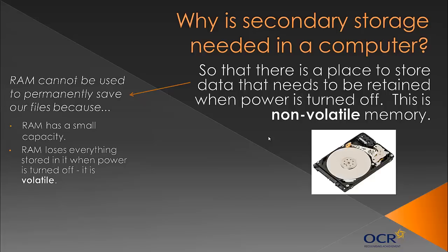RAM generally has a smaller capacity than a hard disk because in RAM it's harder to maintain speed with lots of data, which means hard drives have huge amounts of space — maybe a terabyte, two terabytes, three terabytes. RAM maybe only has eight gigabytes, which is a huge difference.